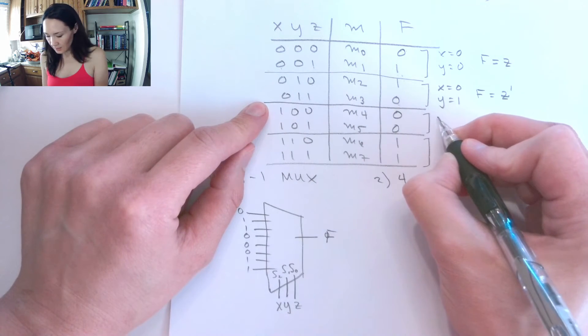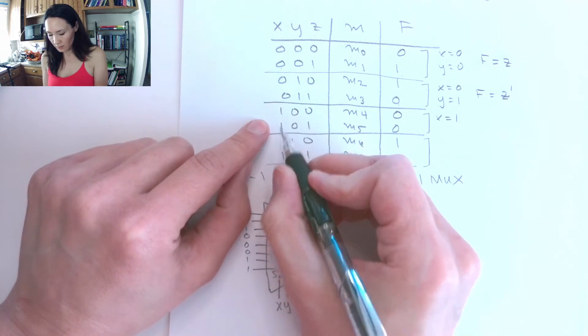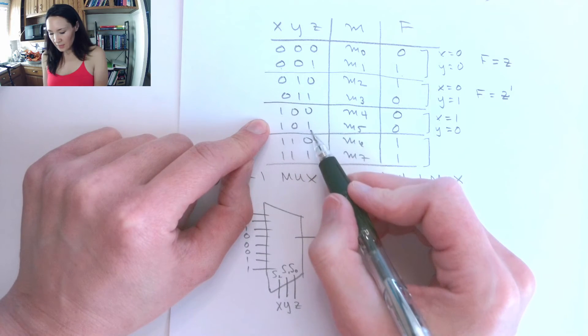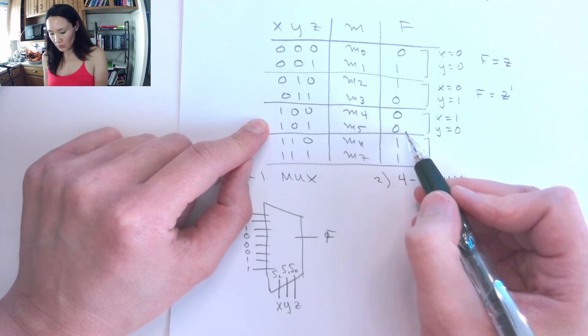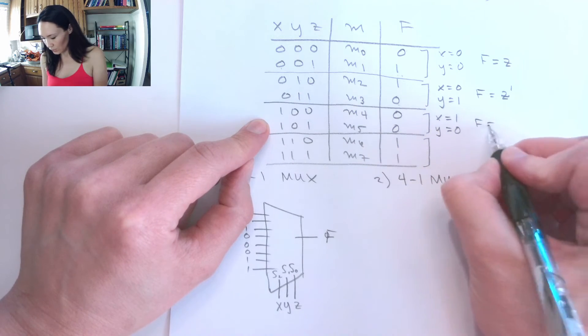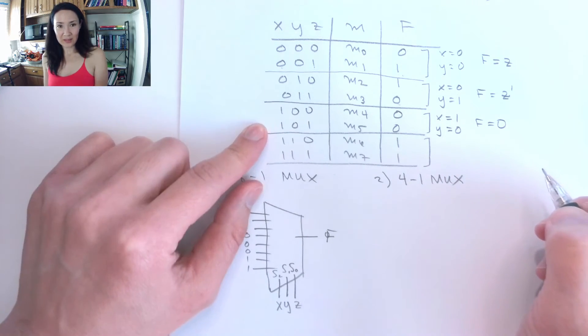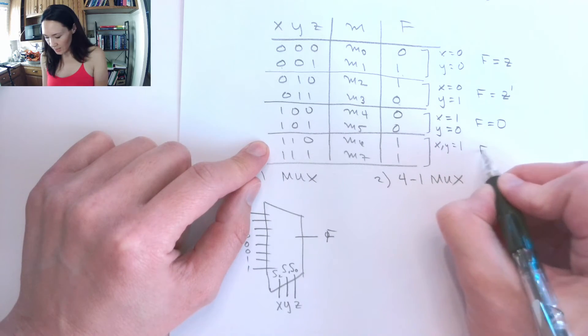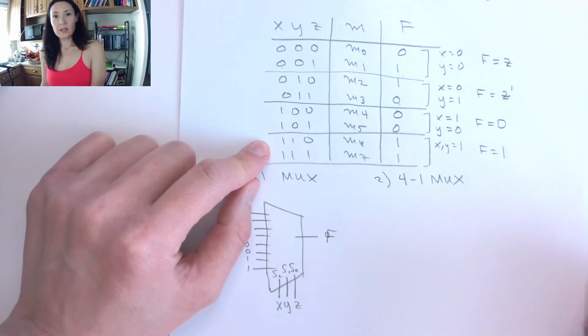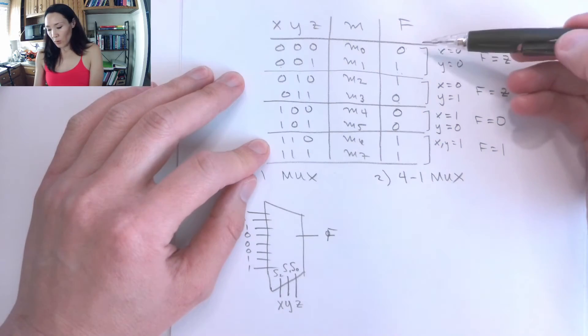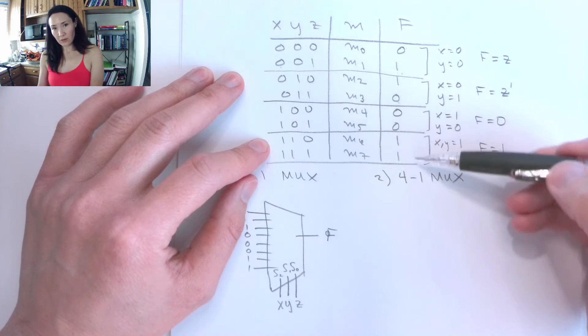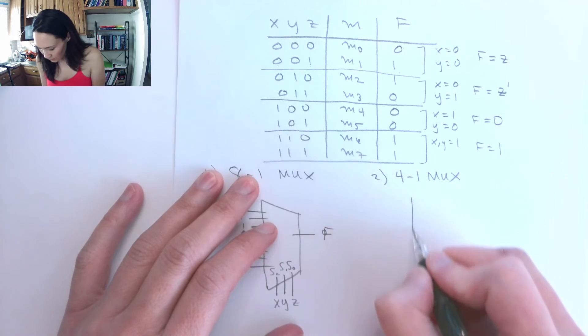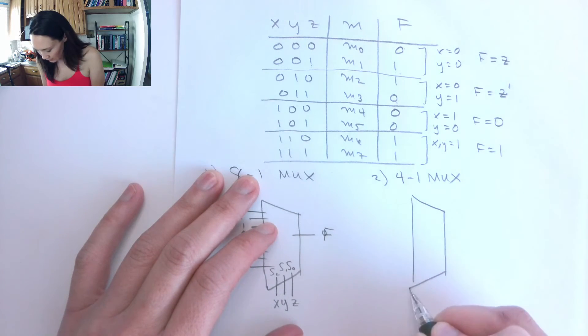Great. So this next case here, here x is equal to 1 between these 2 rows, y is equal to 0, and z is 0, 1, but f is actually just 0 in both of these cases. So you know what we get to do? We just get to say f is equal to 0. And then same thing down here, x and y are both equal to 1, and f is just equal to 1. So see what we did is we went from having 8 different output cases to just 4. Now we can put this into our 4 to 1 multiplexer.